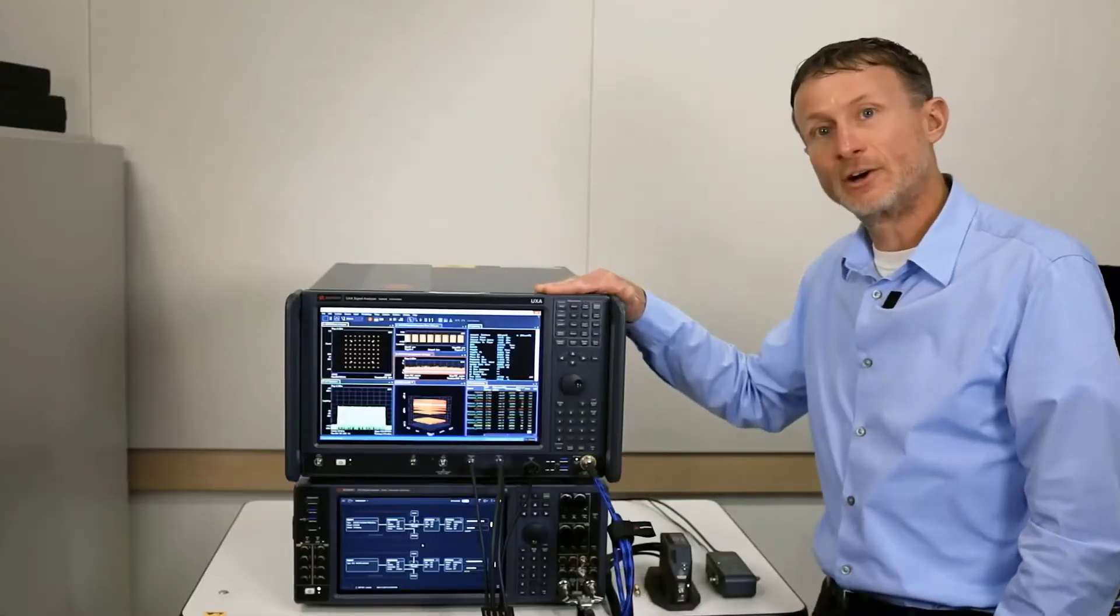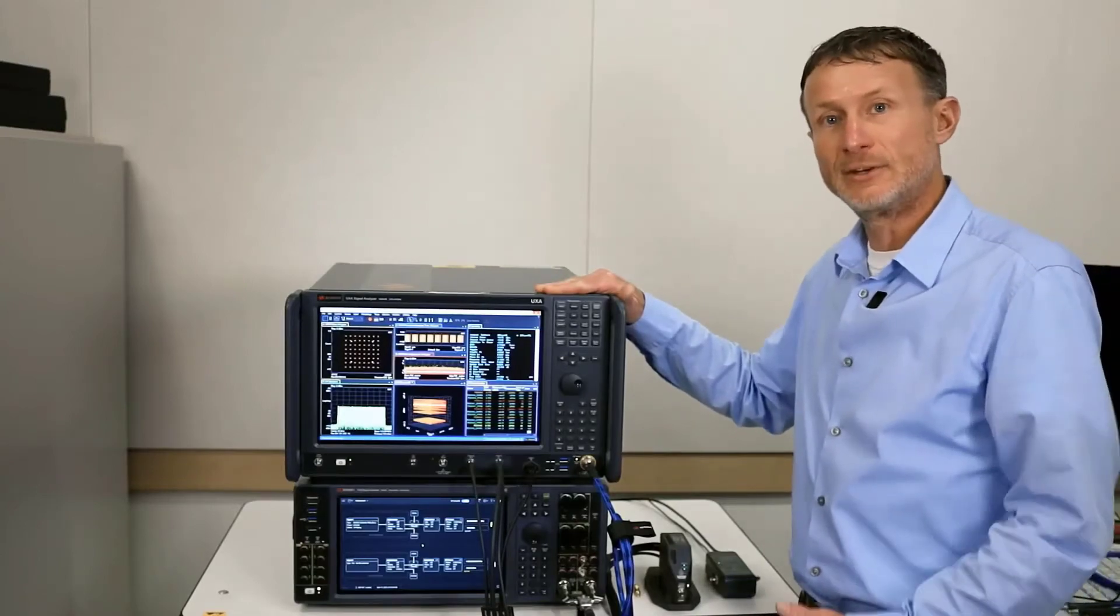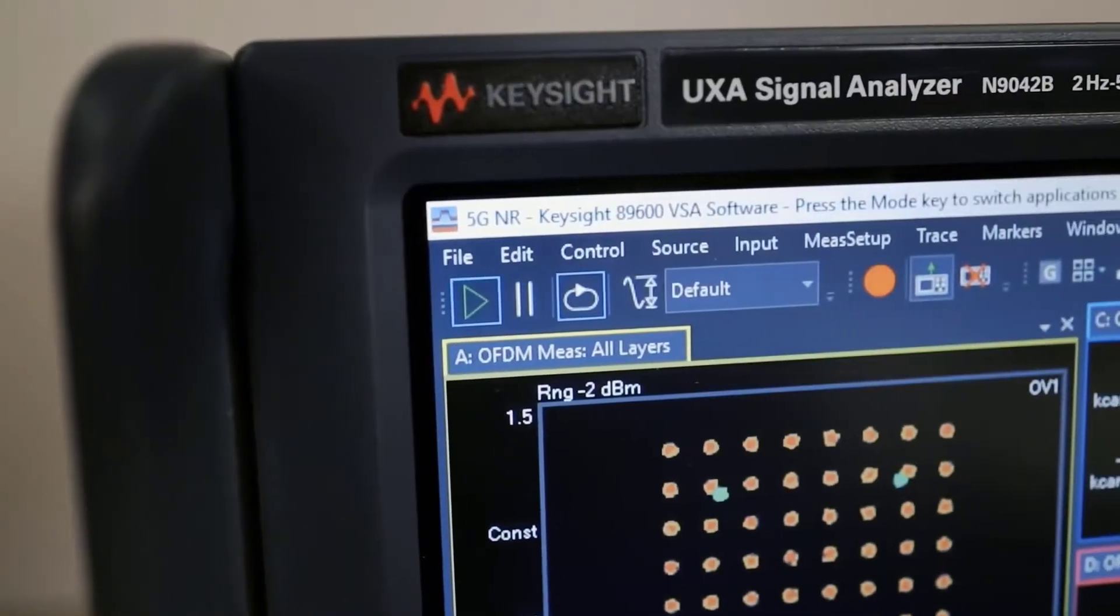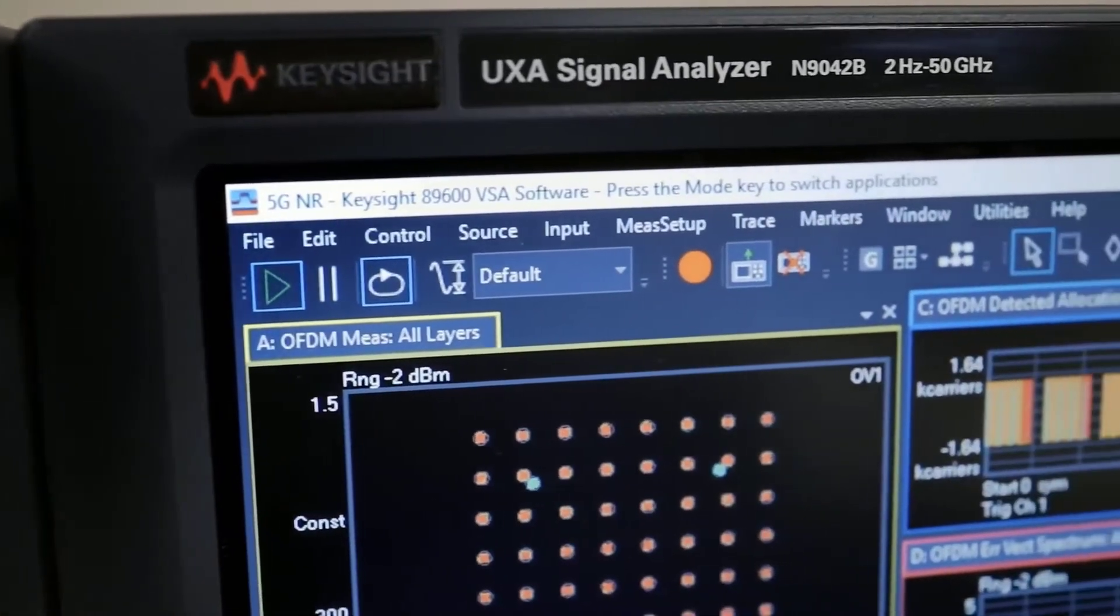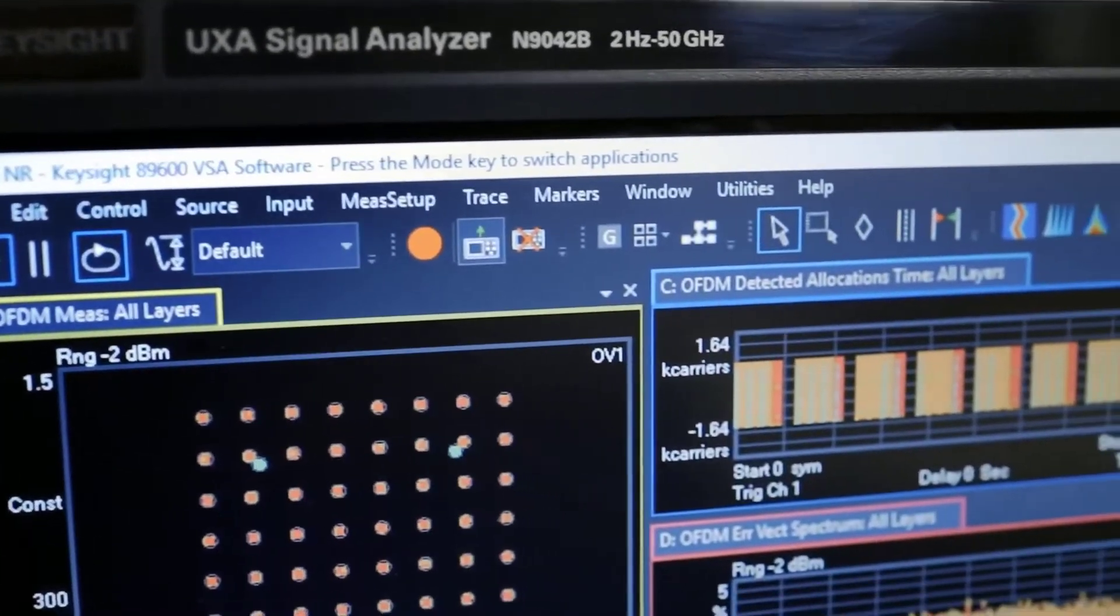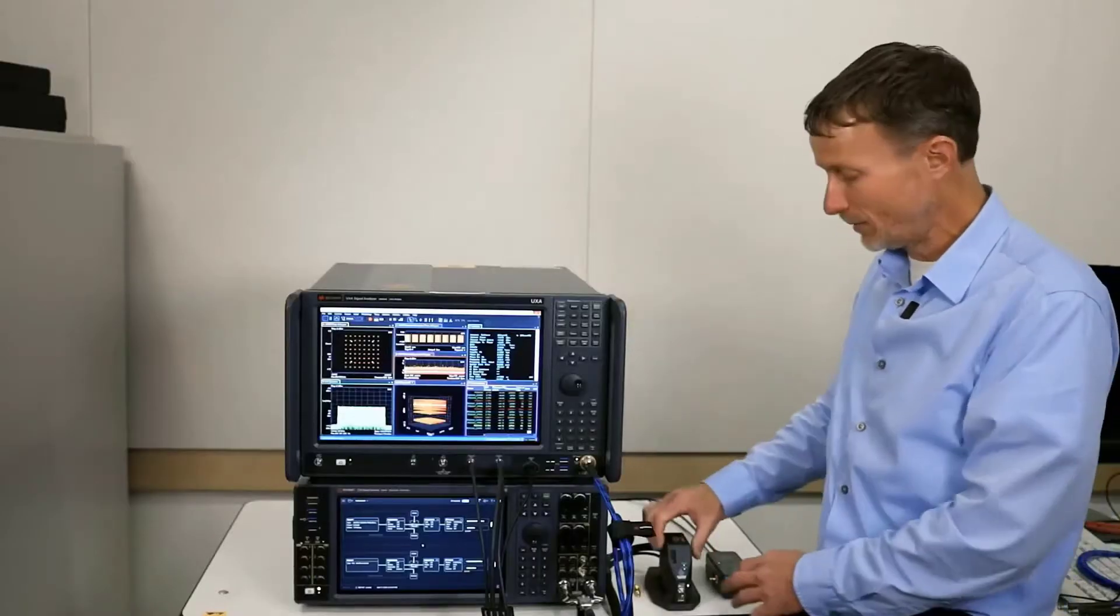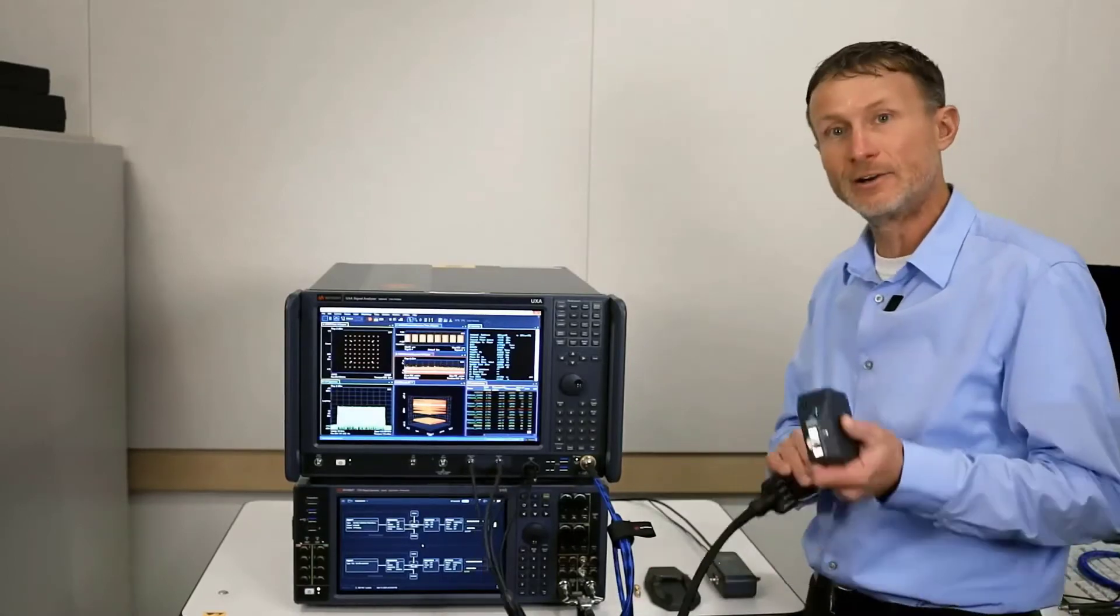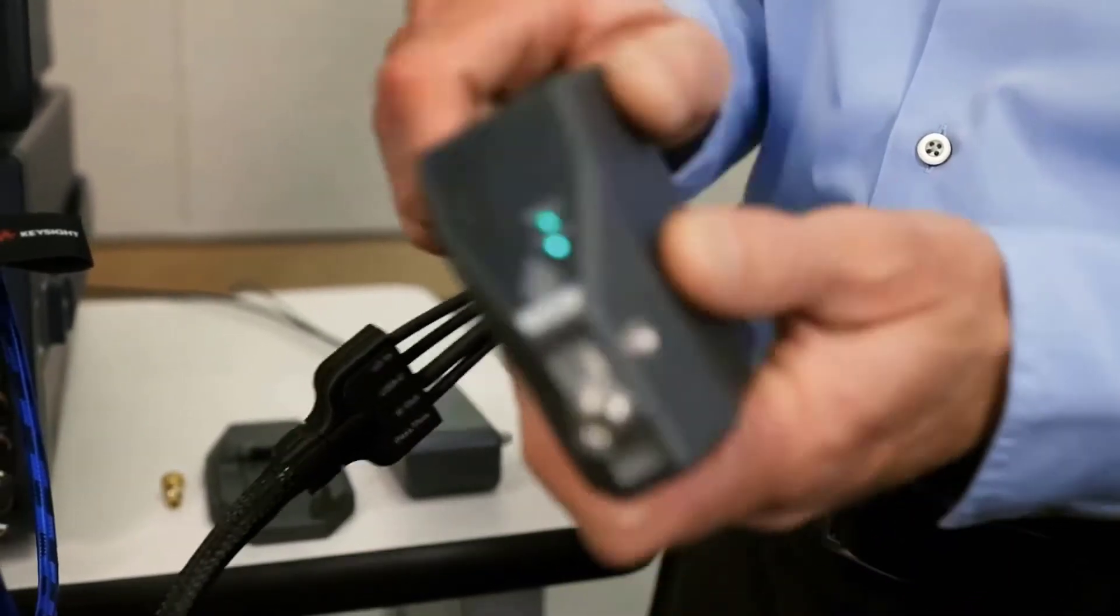On the top, we have our UXA, the newest member of the UXA family. It has frequency coverage up to 50 gigahertz, an internal demodulation capability up to 4 gigahertz, and the frequency range can be extended further all the way to 110 gigahertz with this external remote head.